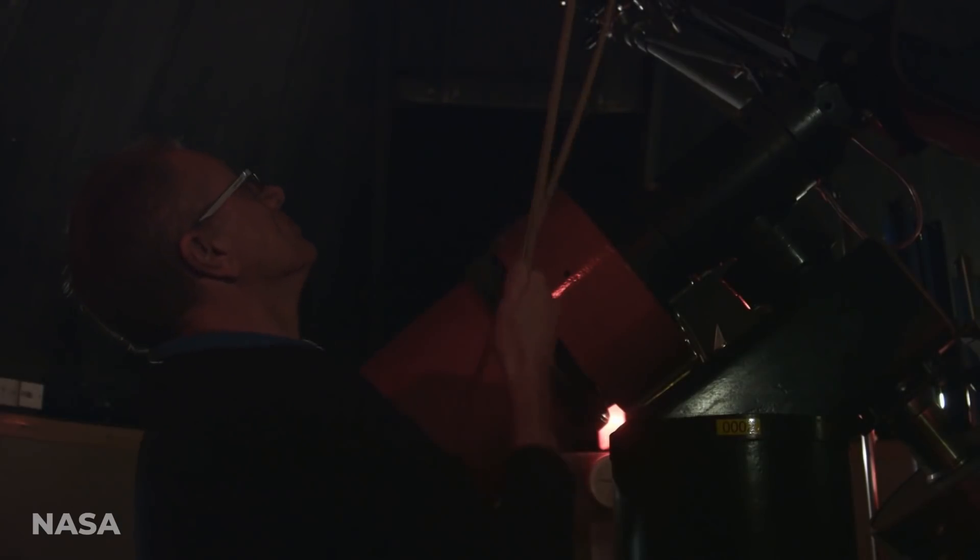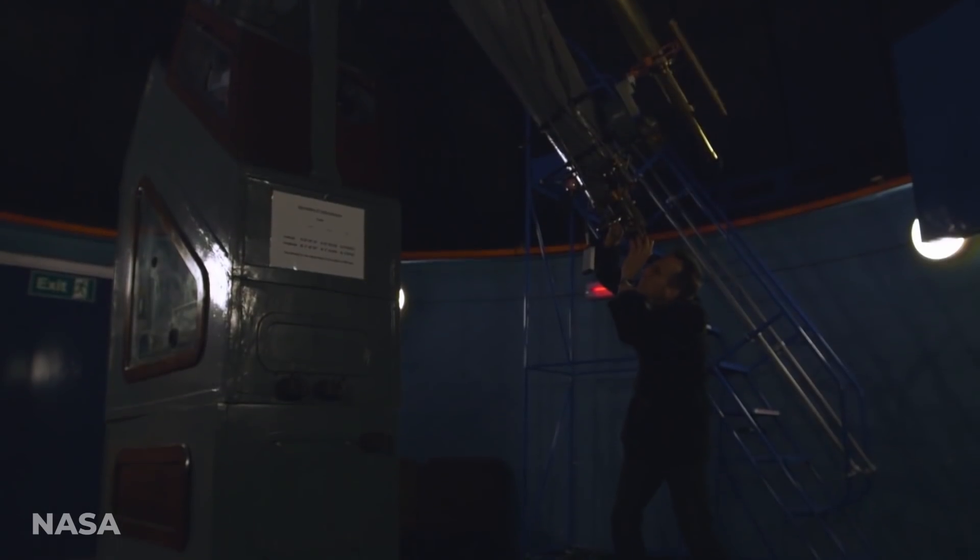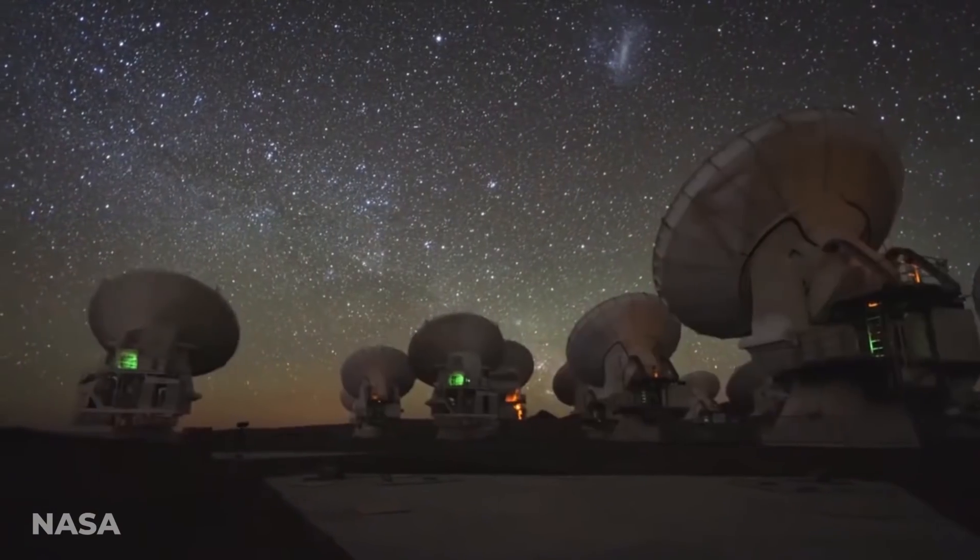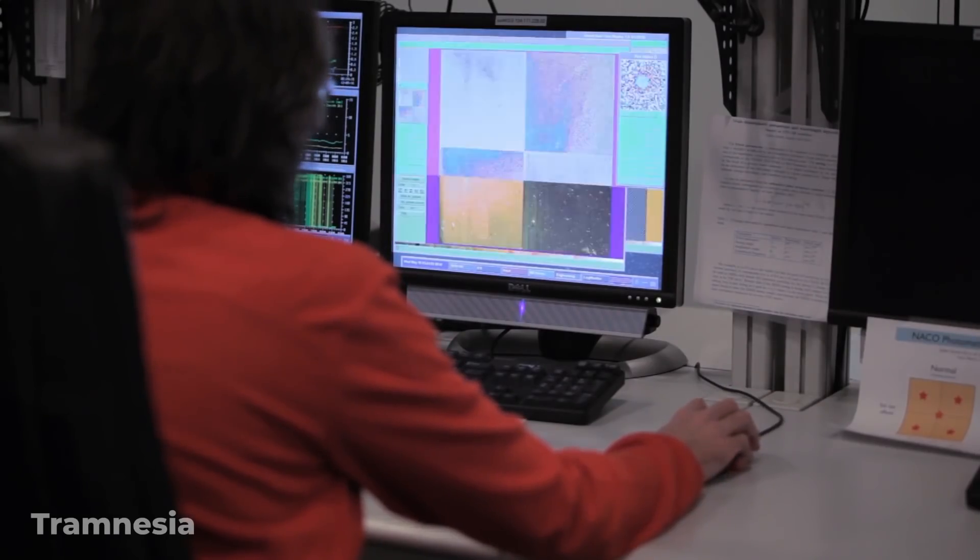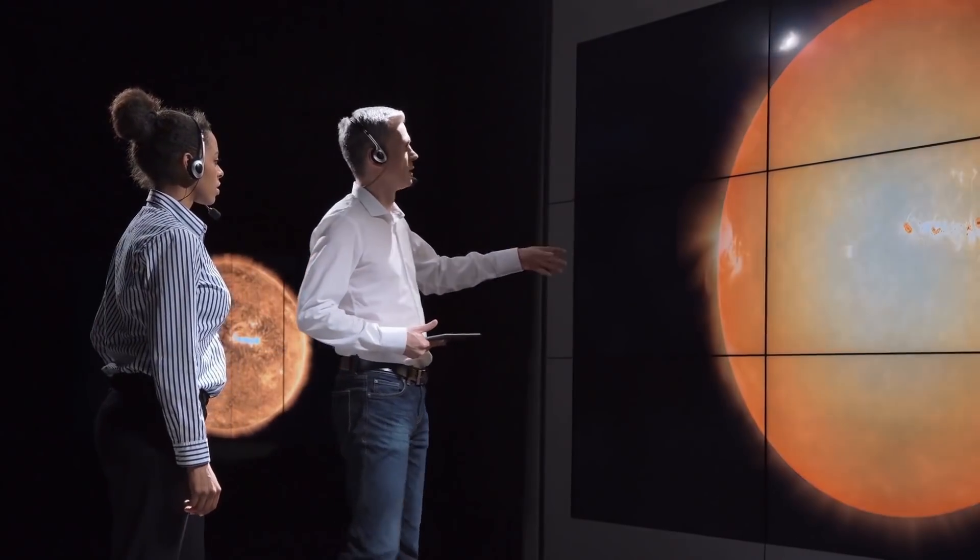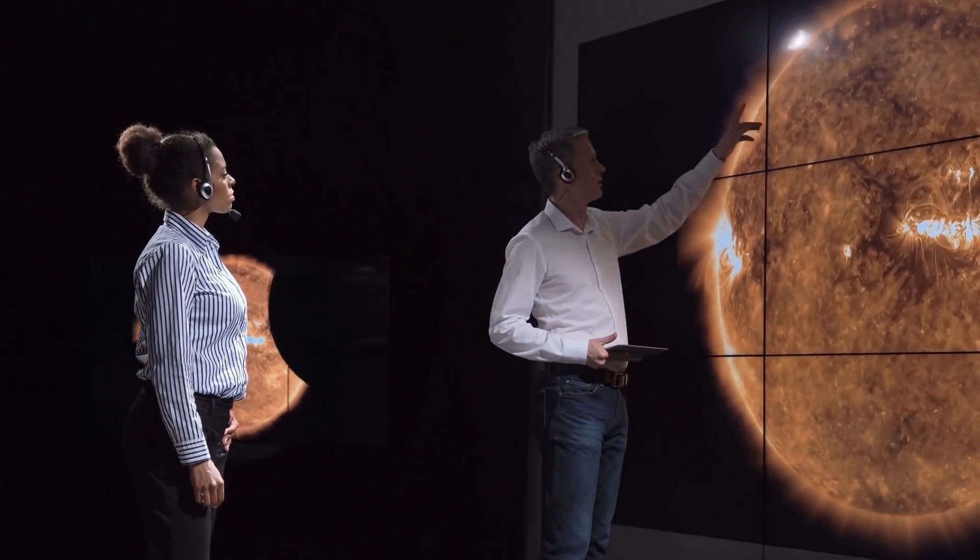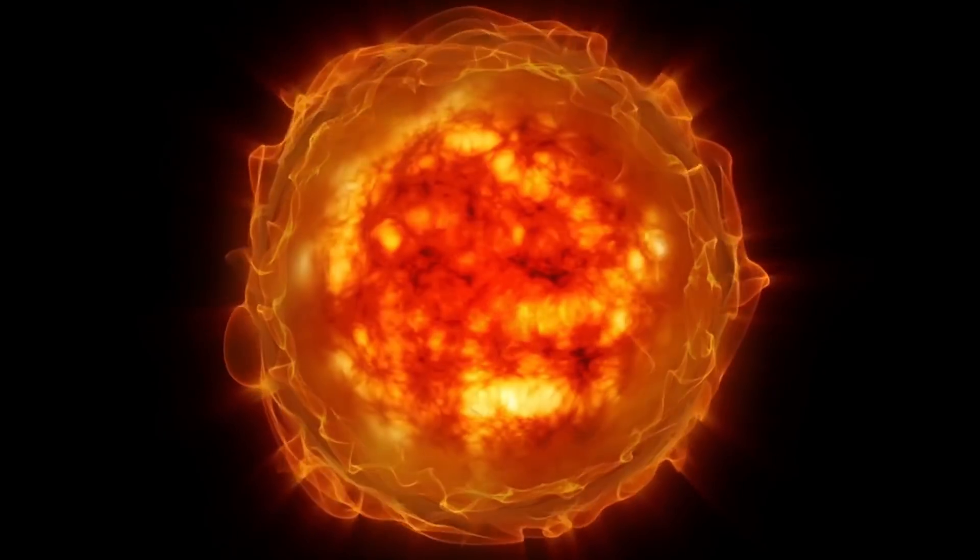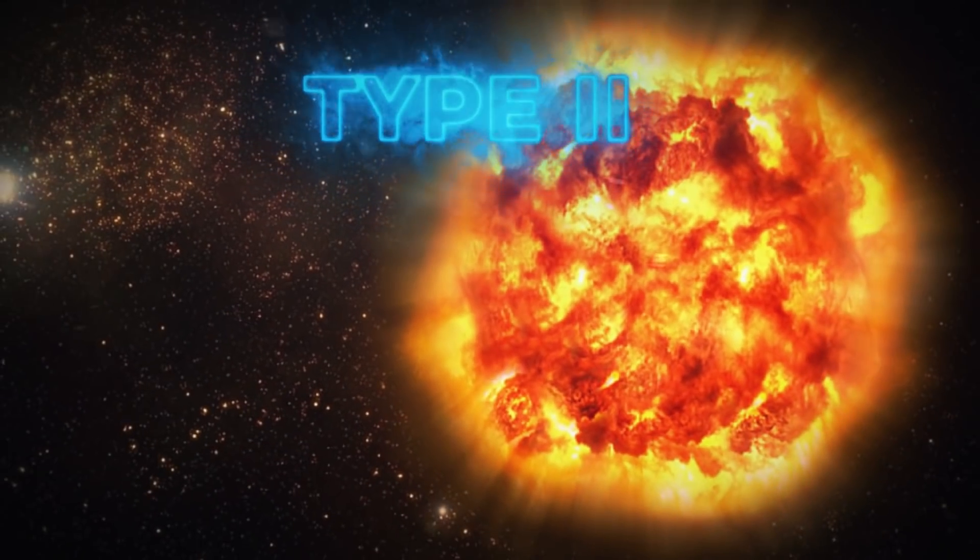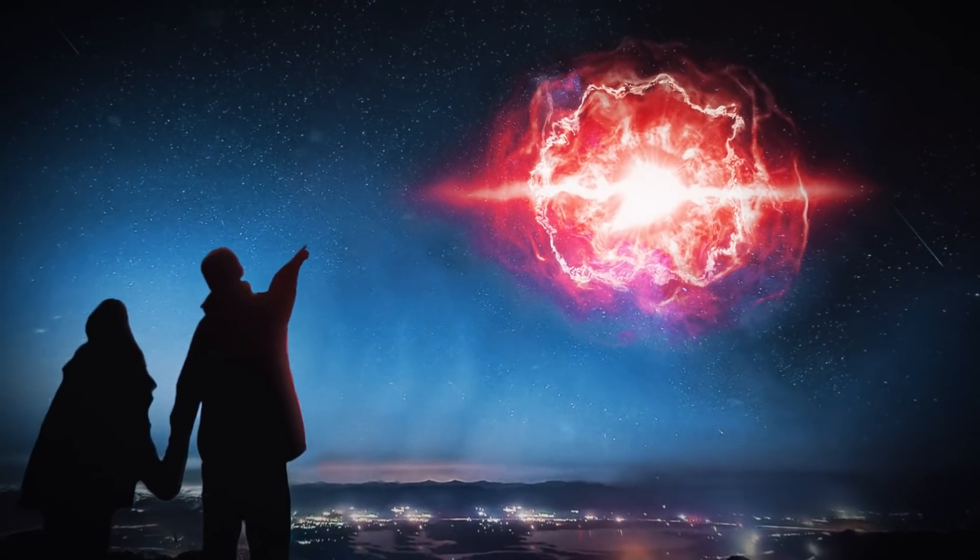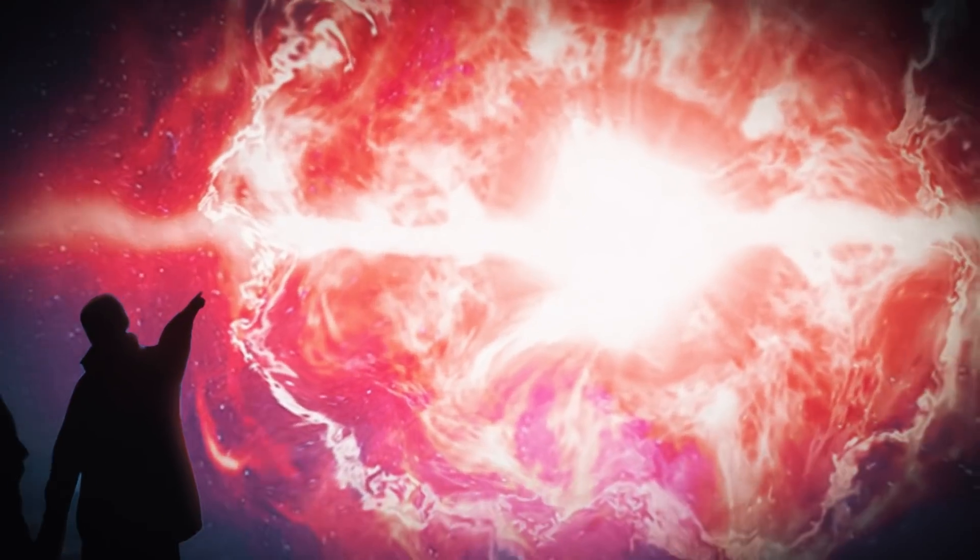Wynn Jacobson-Galan, a National Science Foundation graduate research fellow at University of California Berkeley and the lead author of the study, was astonished by what they witnessed. He stated, this is a breakthrough in our understanding of what massive stars do moments before they die. Direct detection of pre-supernova activity in a red supergiant star has never been observed before in an ordinary Type 2 supernova. For the first time, we watched a red supergiant star explode.